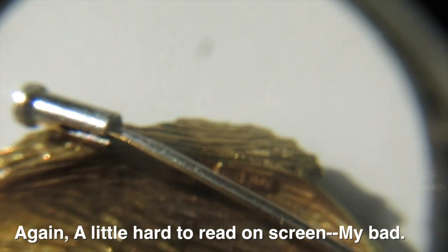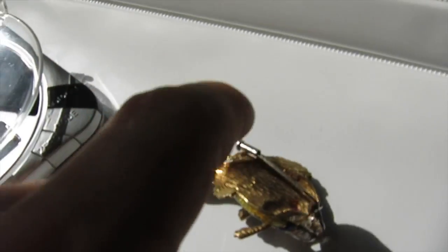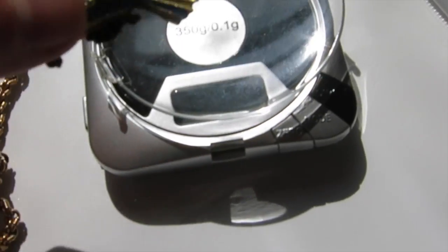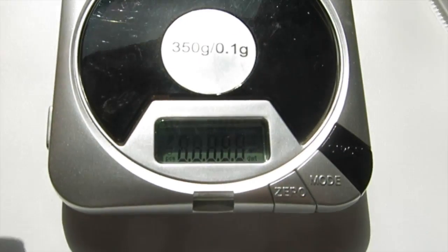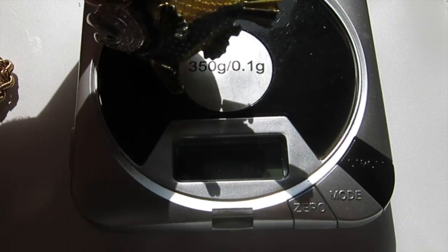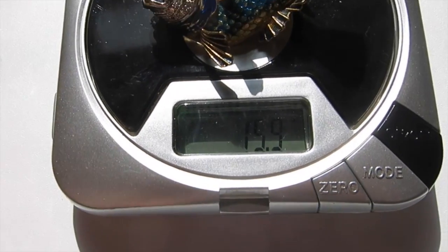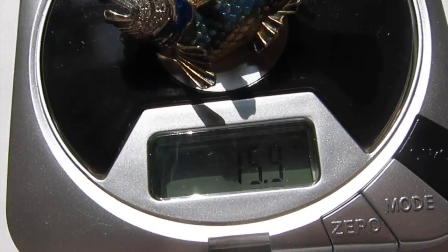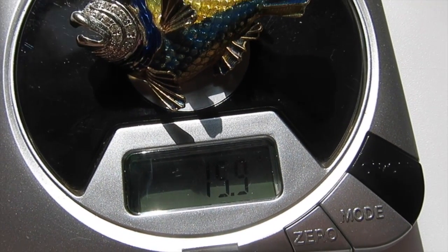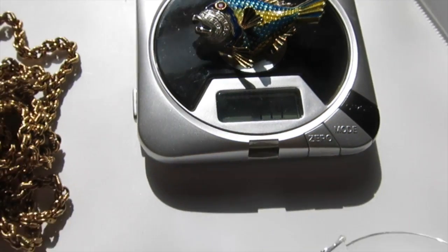If you look over there, you can see that it says 18k Italy. And this guy, let's see how much he weighs. Put him over there, we've got 15.9 grams of 18 karat gold.